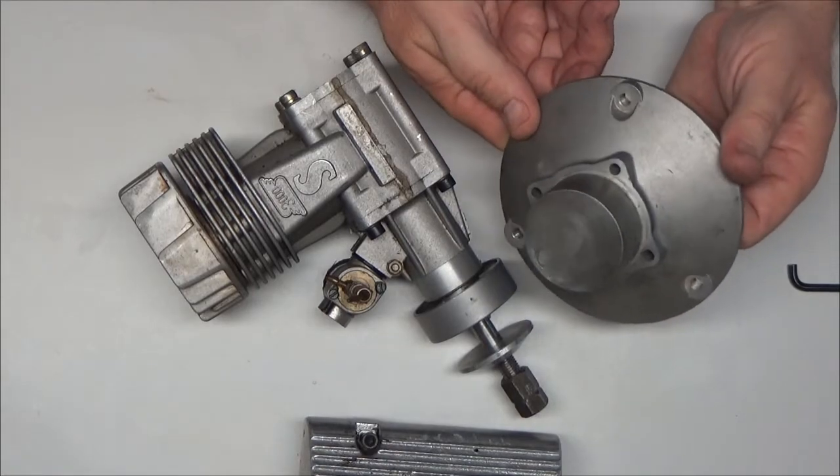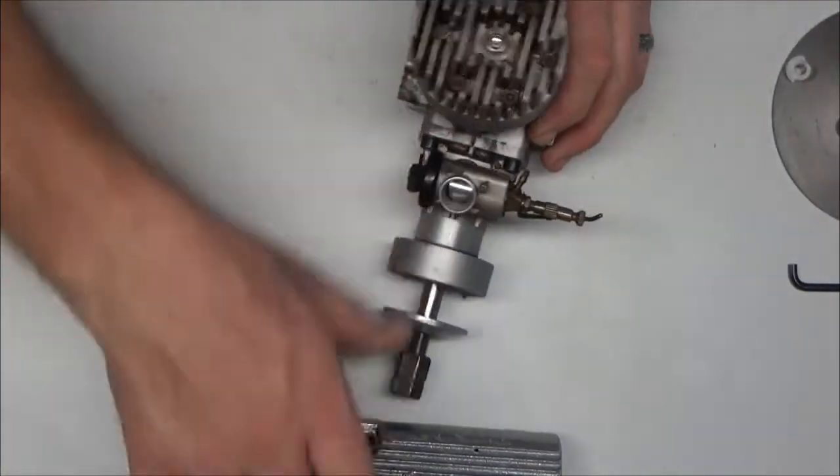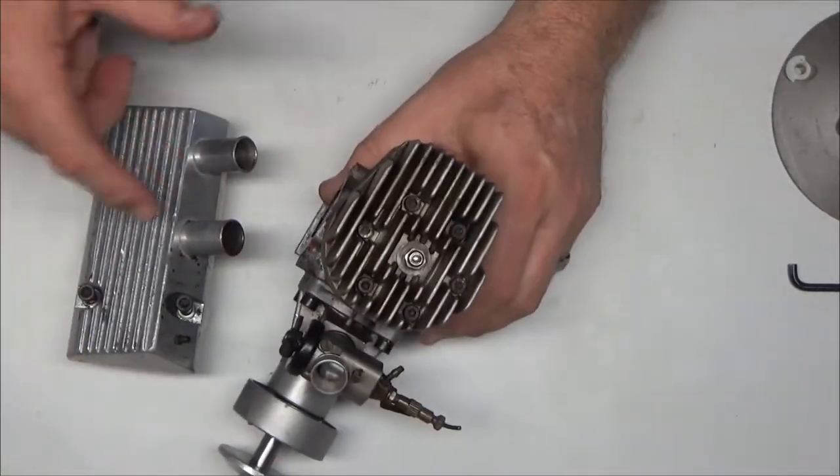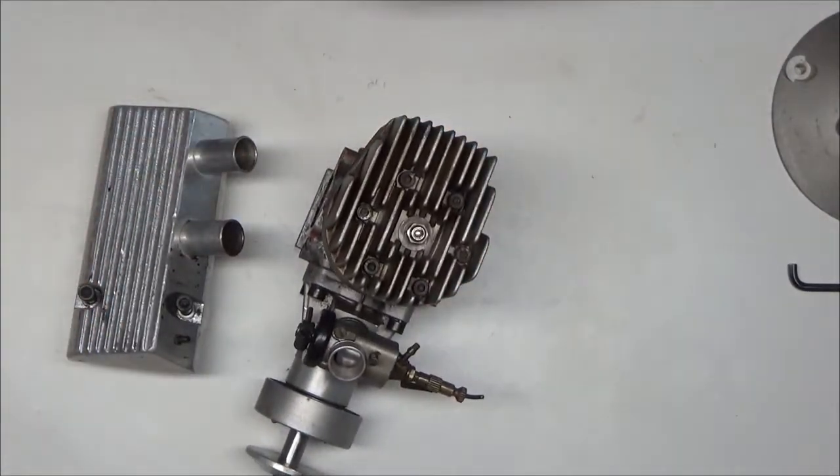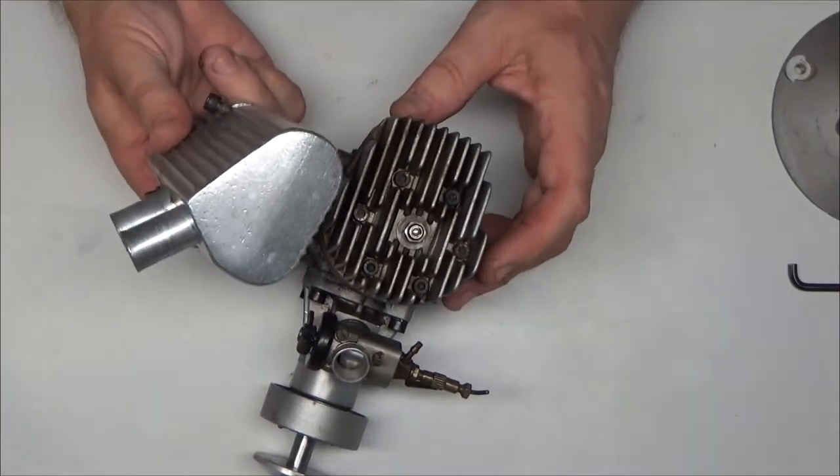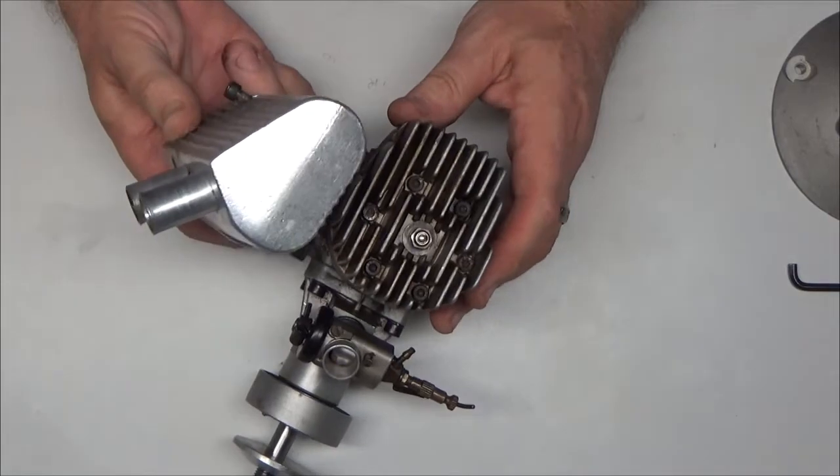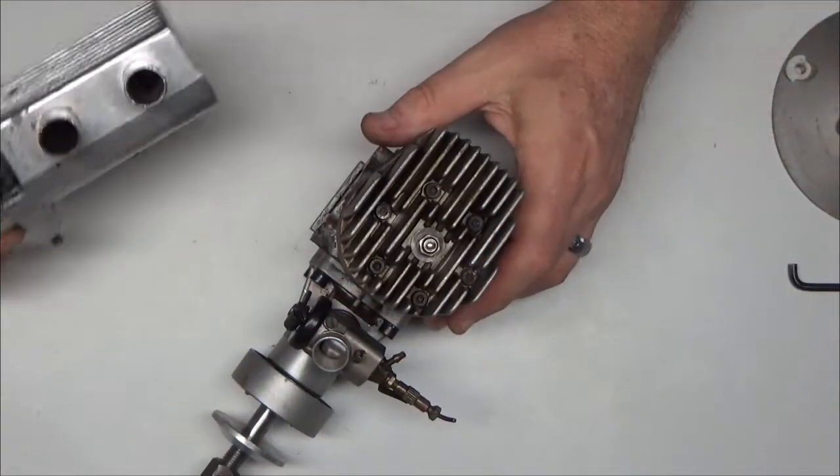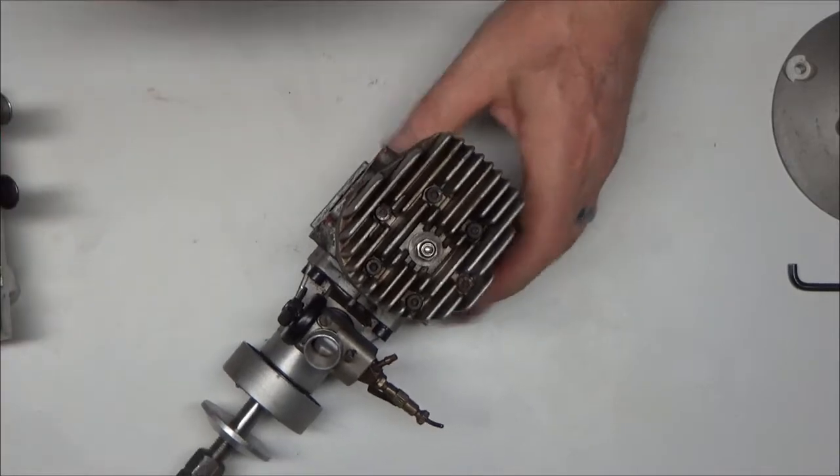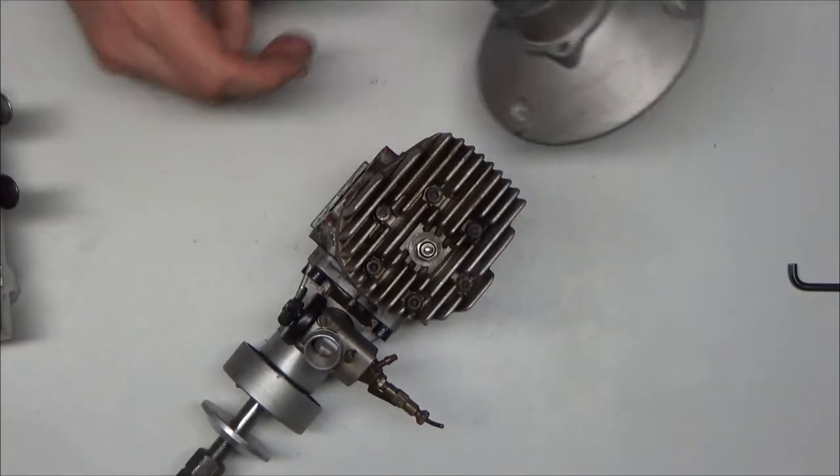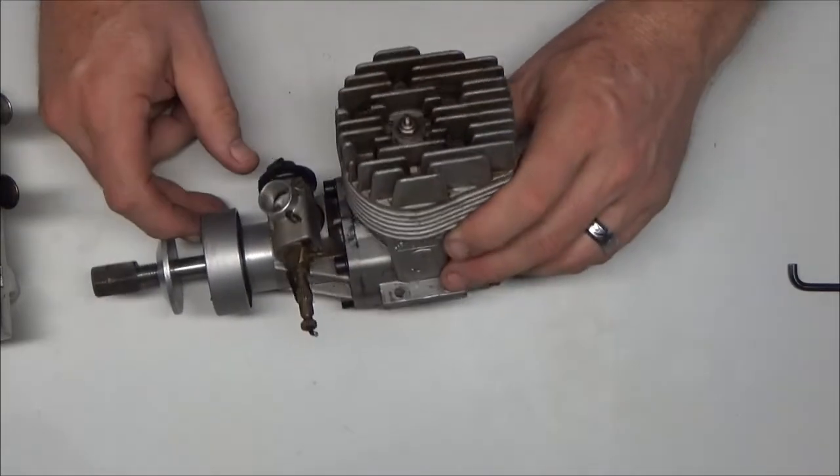But it also came with this backplate mount, which if I'm going to use this exhaust, unfortunately the way the exhaust is, it won't fit on my stand the way it is. And I really don't want to invert it like this because then I got the exhaust going straight out and the pressure nipple is way over here. So what I'm probably going to do is put this backplate mount on and then mount it to my upright on my PSP stand, the same upright that I use to run my twin cylinder engines.